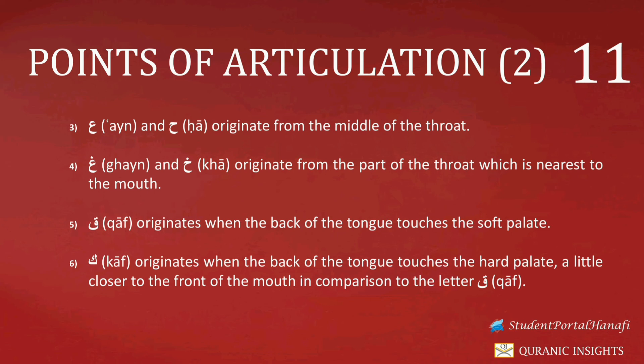First we look towards Qaf. Qaf originates when the back of the tongue touches the soft palate. The soft palate is that part of the mouth which is directly above the back of the tongue. So when the back of the tongue touches the soft palate directly above it, that is when the letter Qaf originates.